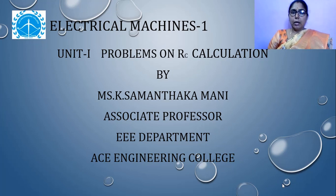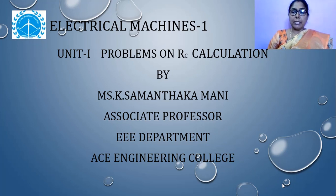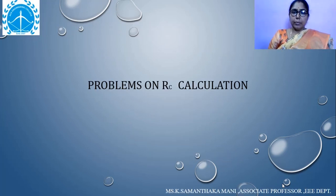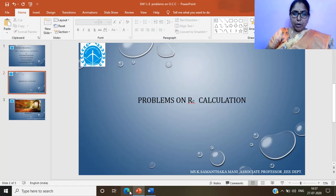Good morning. Today we're going to do some problems based on critical field resistance calculation, which is a continuation of the previous class topic on open circuit characteristic (OCC) — how to draw the OCC. Now we're going to do some problems based on that concept so we can clearly understand and calculate the critical resistance Rc for a given DC generator at a particular speed.